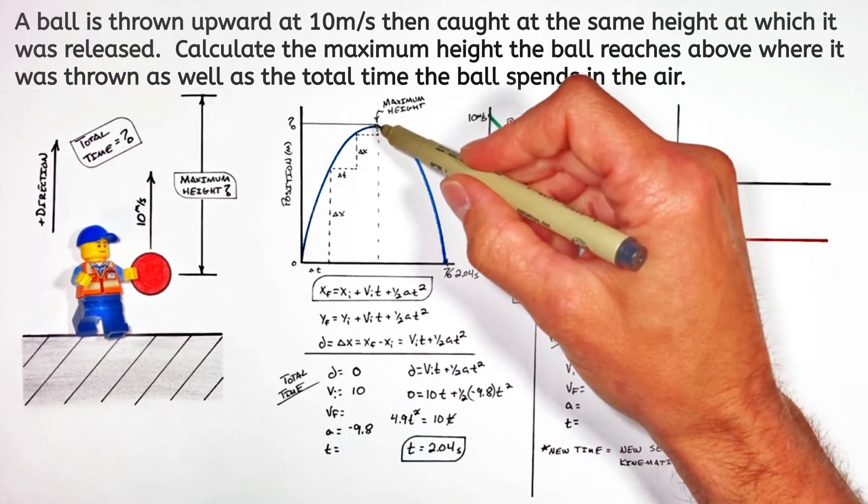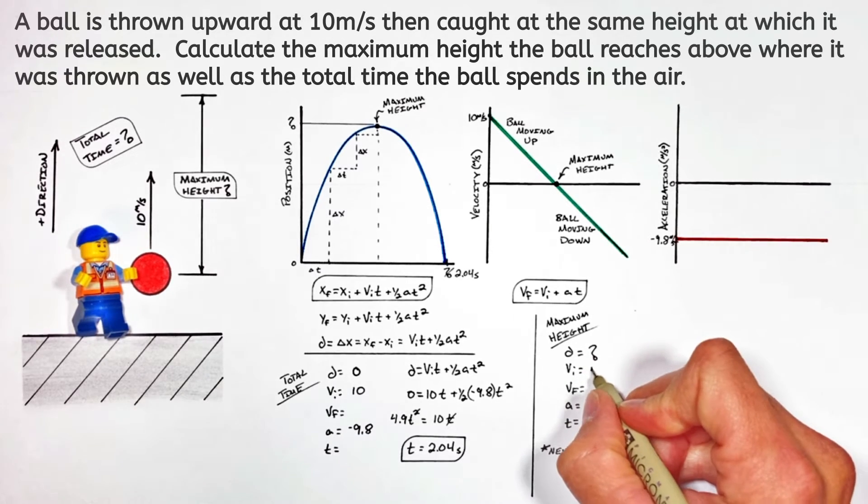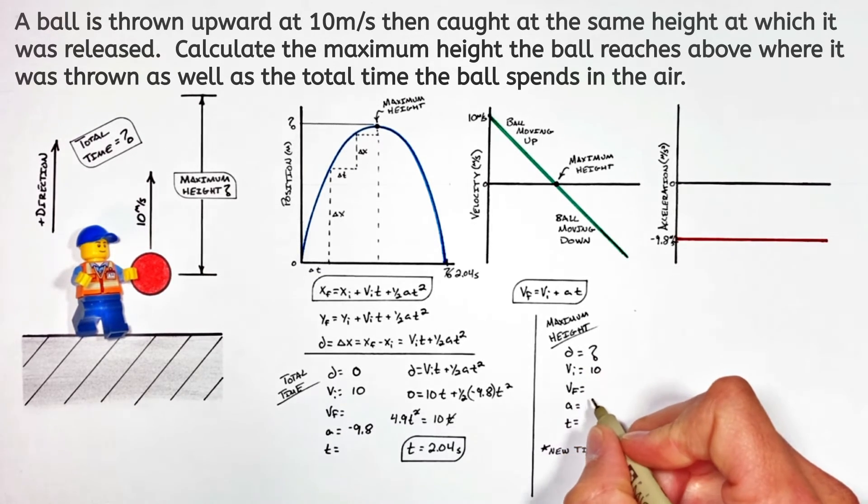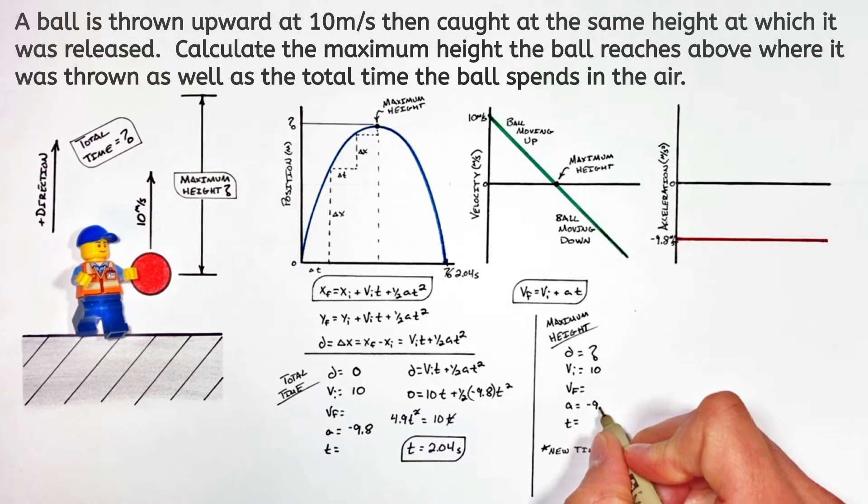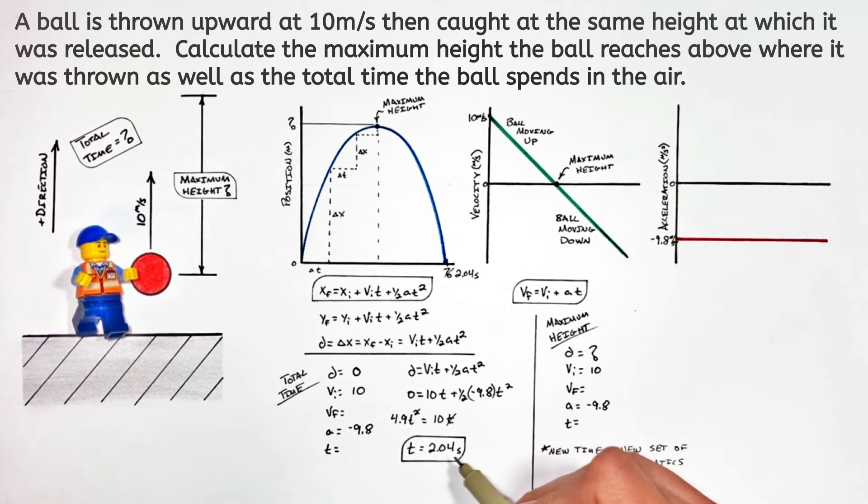The maximum height in this problem isn't zero, it's simply the displacement from where the ball is thrown until it reaches its maximum height. The initial velocity of the ball is still 10 and the acceleration is still negative 9.8.